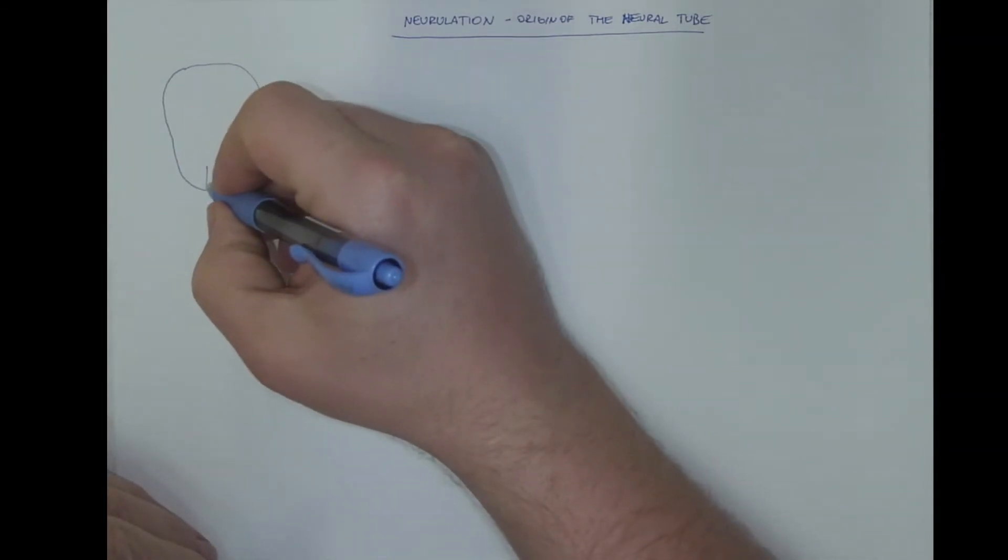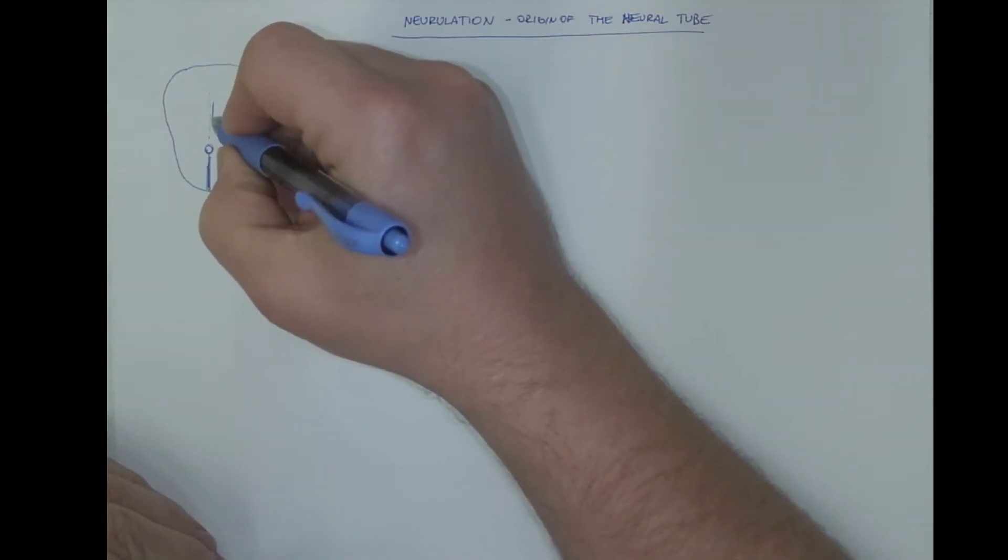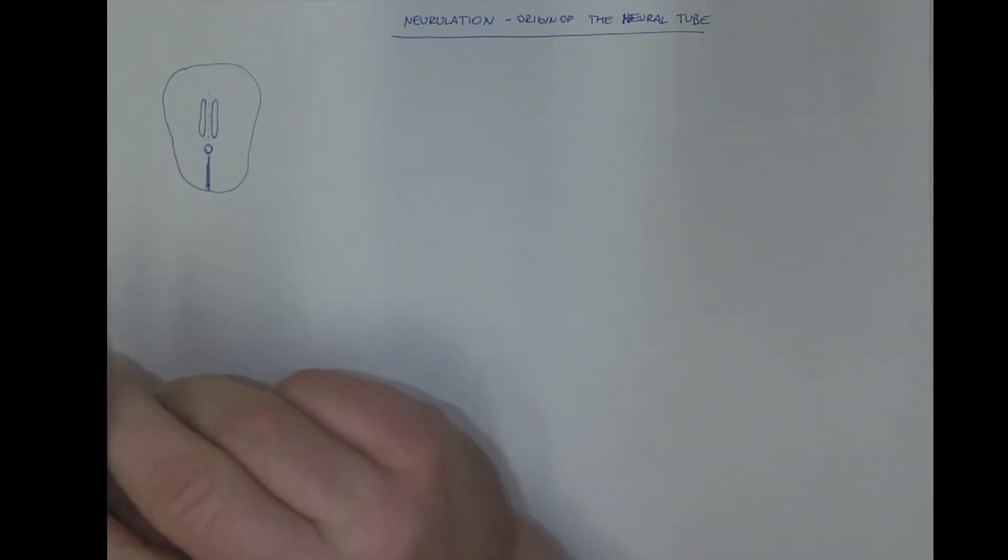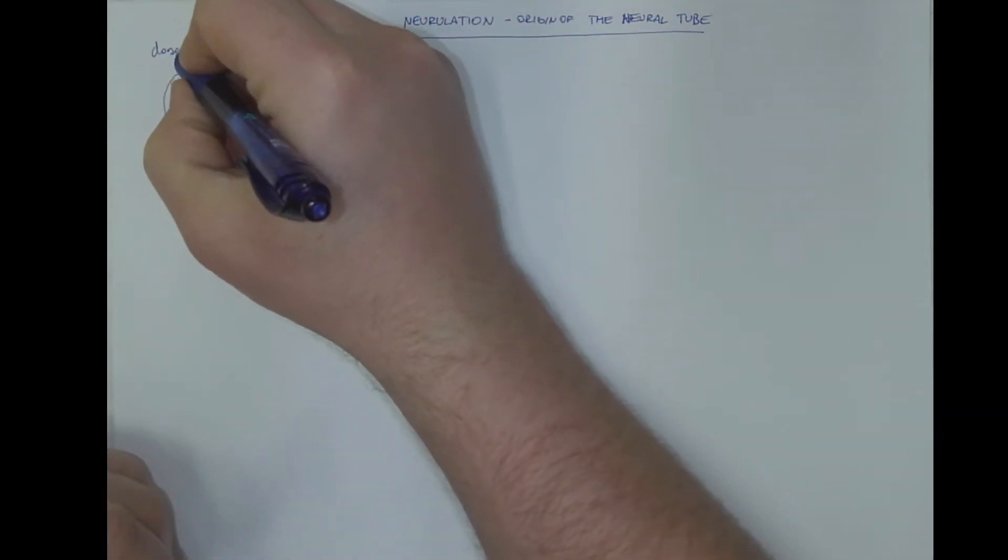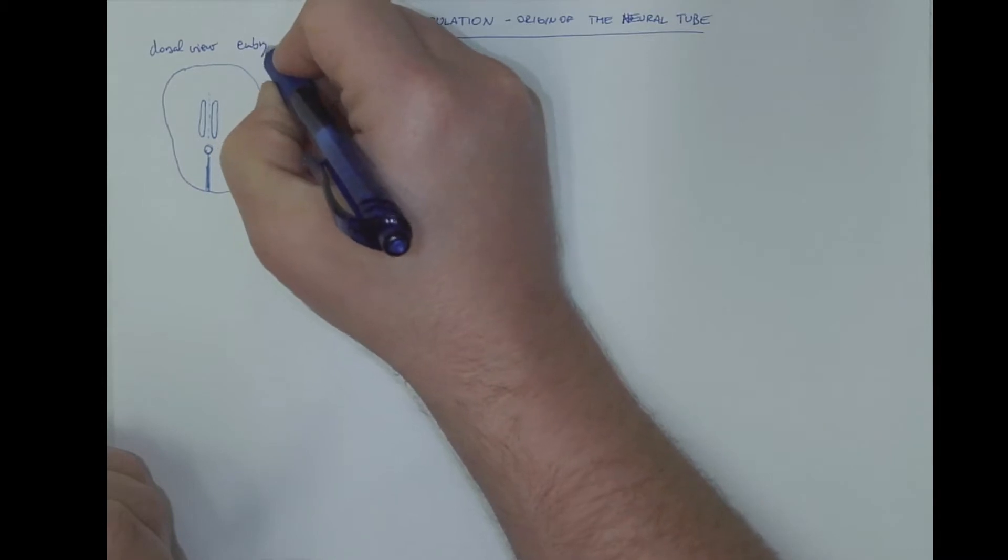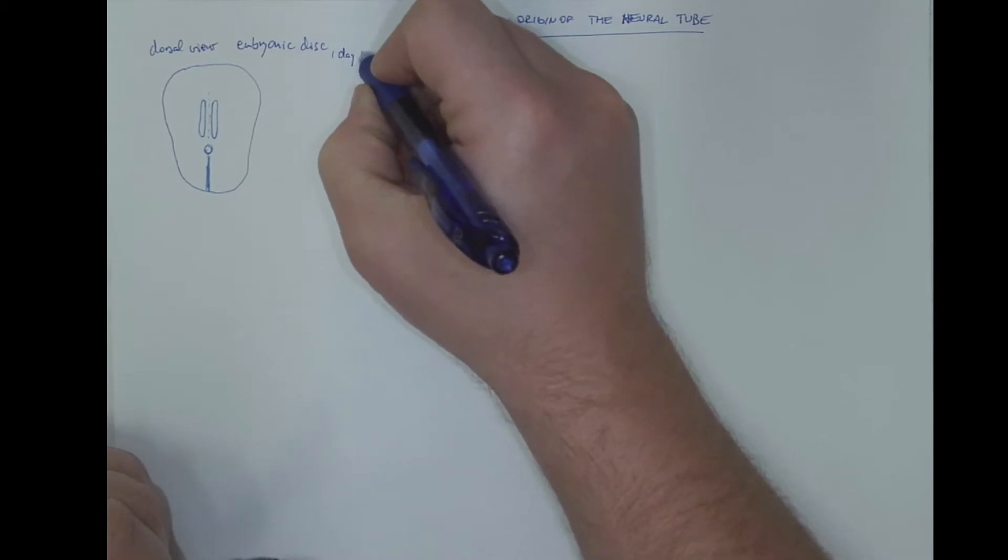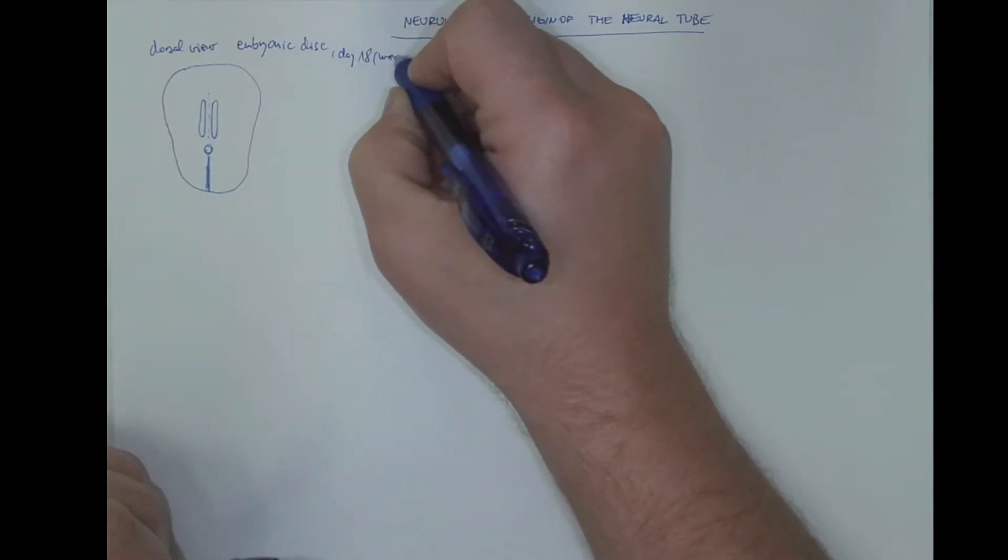We already know that the ectoderm is there thickened in the median plane to form the primitive streak, which ends with a primitive node. However, along the midline there are two thickenings of the ectoderm. This is called the neural plate and in between there is a neural groove. So this is dorsal view on the embryonic disk on day 18, third week.